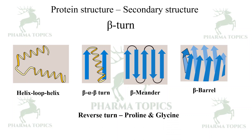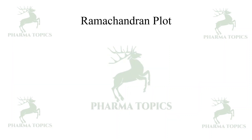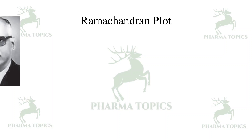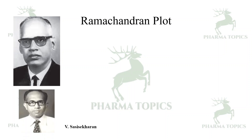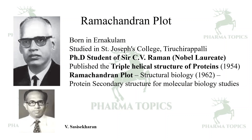Let us learn about the Ramachandran plot. Dr. Ramachandran's co-worker was Dr. Viswanathan Sasisekharan. Ramachandran was born in Ernakulam and studied at Saint Joseph's College, Tiruchirappalli. He was a PhD student of Sir C.V. Raman, a Nobel laureate. He published the triple helical structure of collagen in 1954, and the Ramachandran plot was published in 1962 — it remains a key tool in structural biology and molecular biology studies.